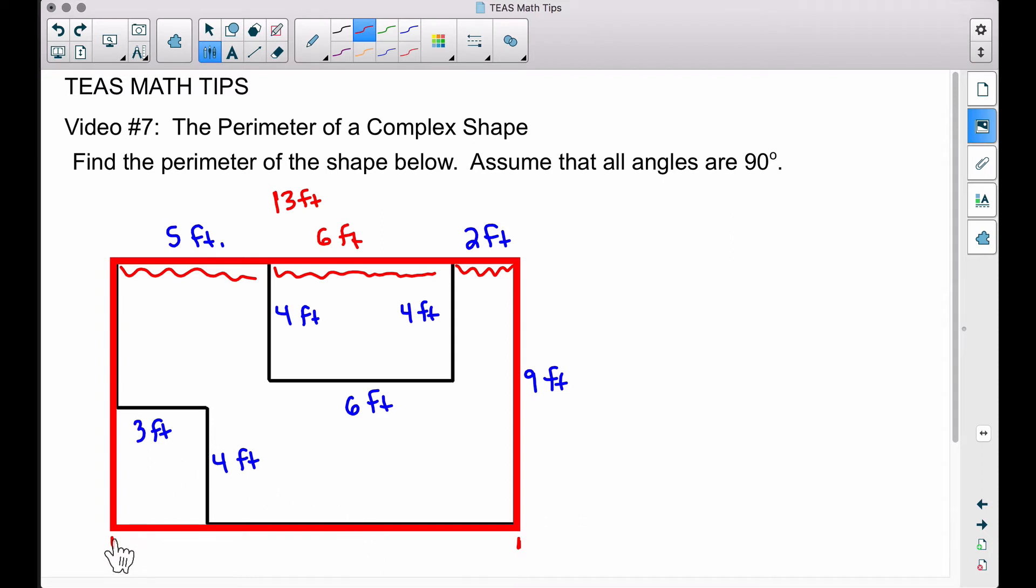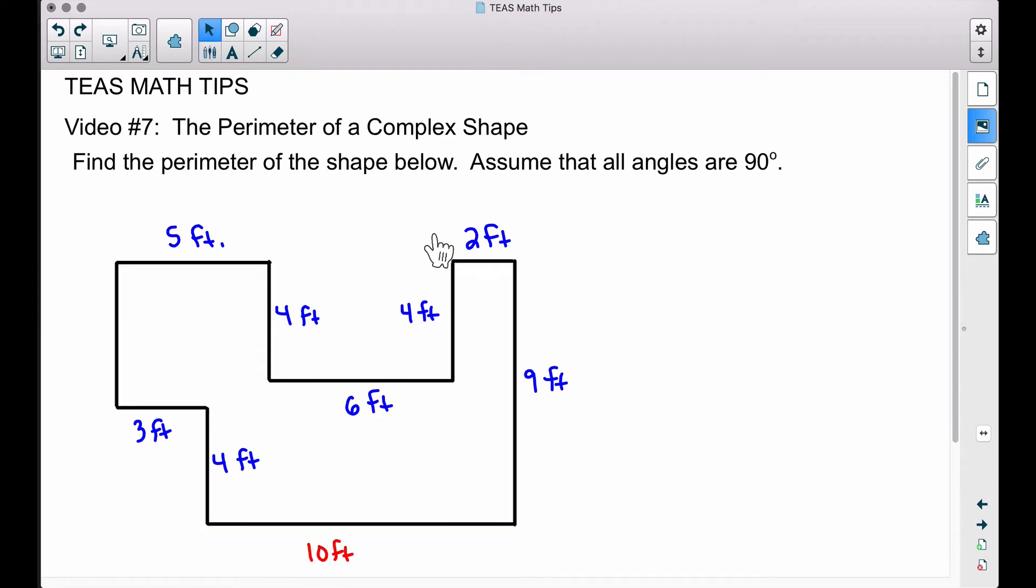But notice we have a little section right here, 3 feet. So this must be 3 feet. And if the entire length across this thing is 13 feet, that means this little black line from here to here must be 10 feet. So taking all that crazy stuff away, looking at this again, now from here to here that's 10 feet, and then from here to here where I had that red rectangle, that's 3 feet.